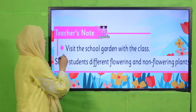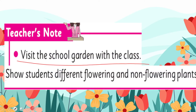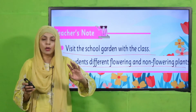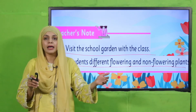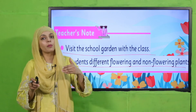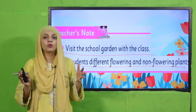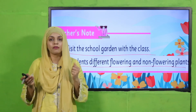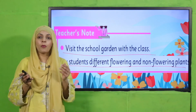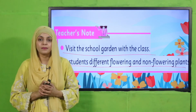Visit the school garden with the class and show students different flowering and non-flowering plants. Teachers can take children out to the garden — bachre enjoy bhi karenge. Wahan aap unko different poudhe dikhayein jinn par phool lagte hain aur jinn par phool nahi lagte, aur phir categorize karke batayein: these are flowering and these are non-flowering. Pause the video and continue this activity.